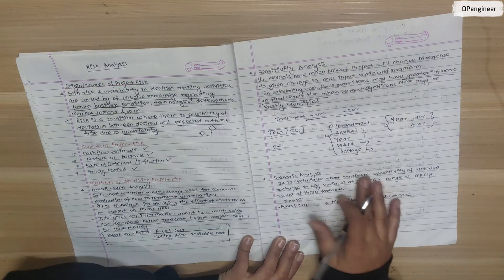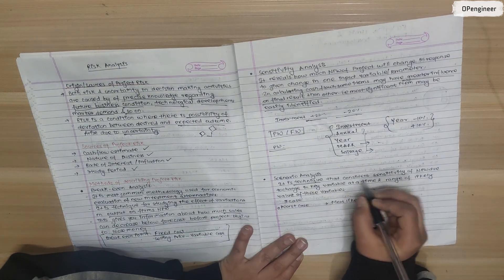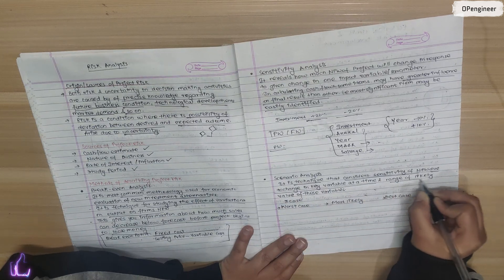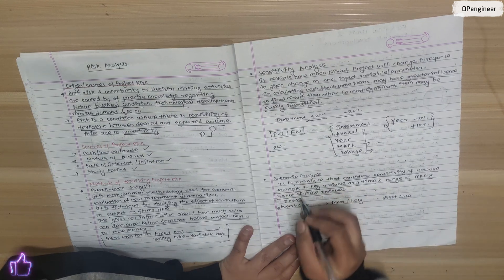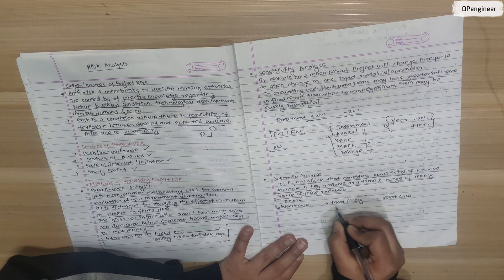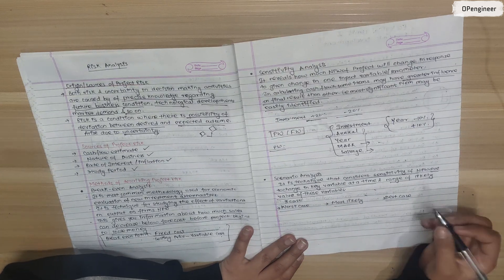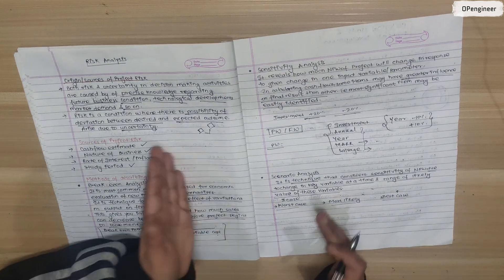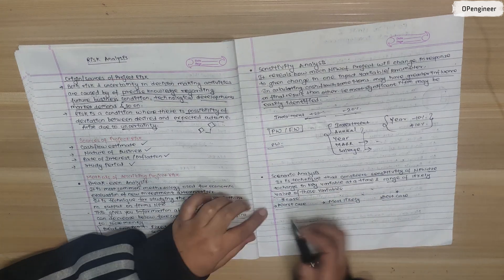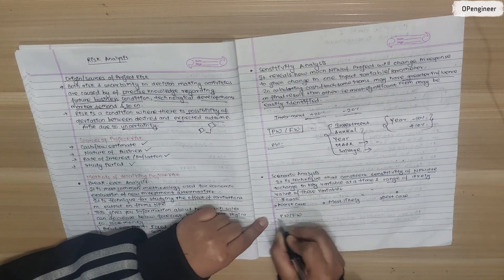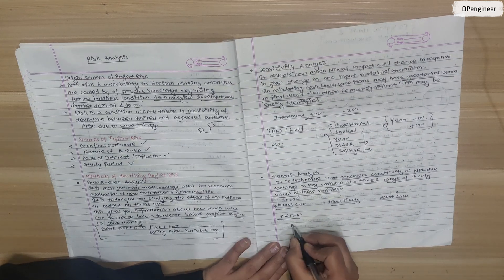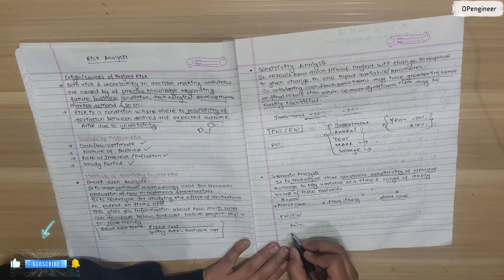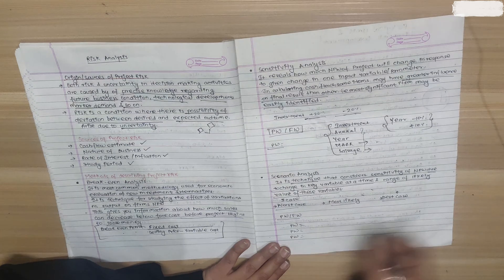Next is scenario analysis. It is a technique that considers sensitivity of NPW due to change in key variables at a time and range of likely values of these variables. In scenario analysis, there are three cases: worst case, most likely case, and best case. Best case is the best scenario, most likely is medium type, and worst case is the worst scenario. For scenario analysis calculation, we also use present worth and future worth. We calculate present worth or future worth for worst case, most likely case, and best case - all three calculations.